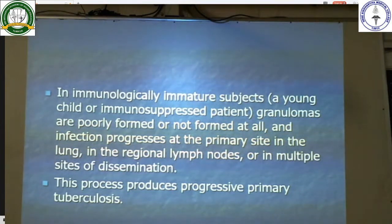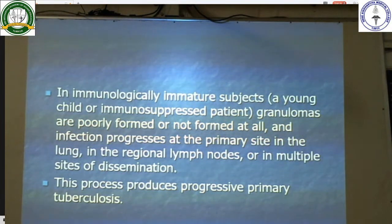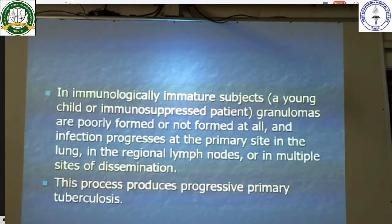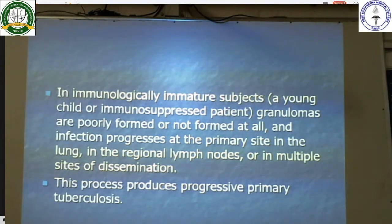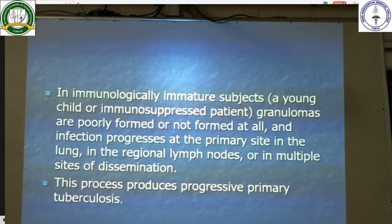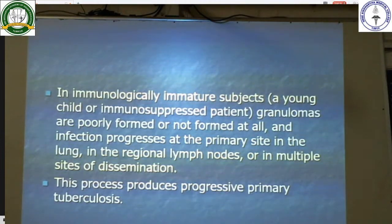The lung lesion of primary tuberculosis is known as the Ghon focus. It is found in the subpleural area of the upper segments of the lower lobes or in the lower segments of the upper lobes. Initially it is a small well-defined area of inflammatory consolidation which drains into the hilar lymph nodes. The combination of a peripheral Ghon focus and involved mediastinal or hilar lymph nodes is called the Ghon complex.